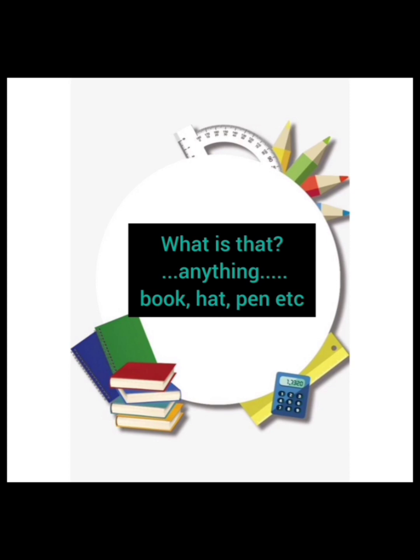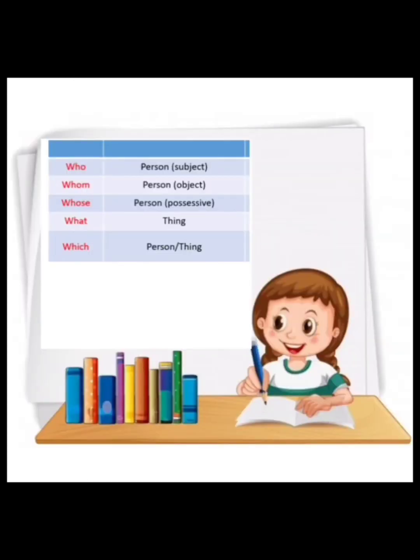Specifically: 'who' and 'whom' will be answered with a person; 'whose' will be answered with a possessive person; 'what' will answer about a thing; and 'which' will be answered with the name of any particular person or thing.